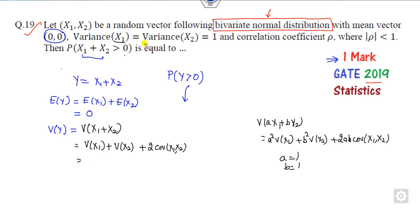What is the variance of x1? They are the same and equal to 1, so this is 1 plus 1, which is 2. What is the covariance? It is not given to you, but the correlation coefficient is given, so we can find the covariance from the correlation coefficient divided by square root of variance x1 times variance of x2.